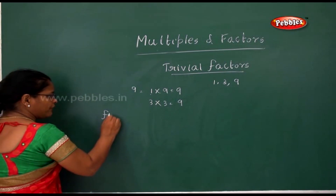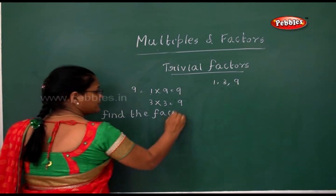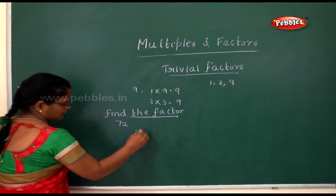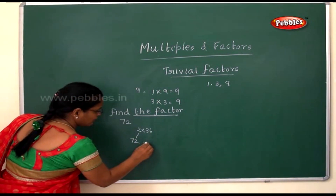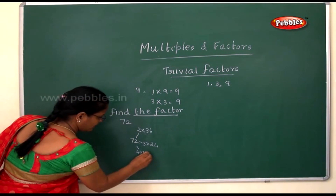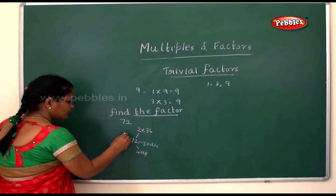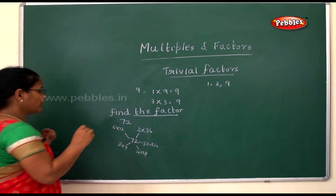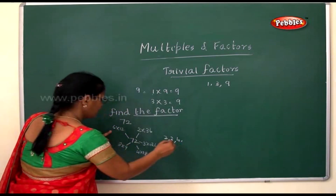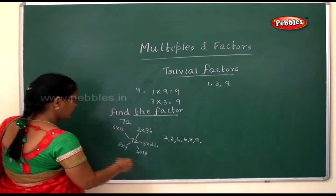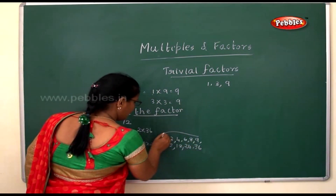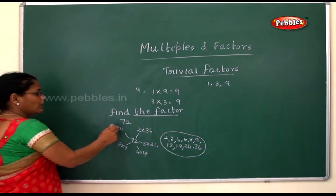Now let's find the factors of seventy-two. Two thirty-sixes are seventy-two, three twenty-fours are seventy-two, four eighteens are seventy-two, eight nines are seventy-two, six twelves are seventy-two. So the factors for seventy-two are one, two, three, four, six, eight, nine, twelve, eighteen, twenty-four, and thirty-six.